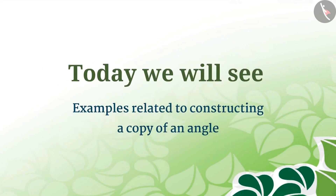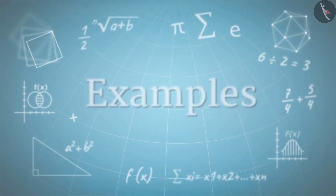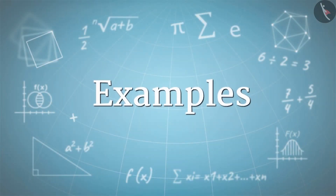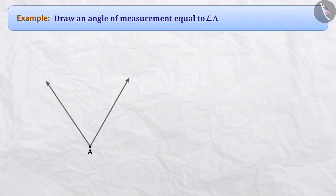Today, we will see examples of constructing angles equal to a given angle. Draw an angle of measurement equal to angle A. Here, we are given angle A whose measurement we do not know, and we have to construct an angle of measurement equal to this angle.